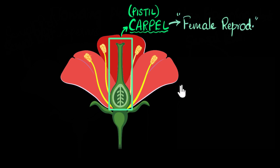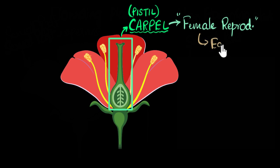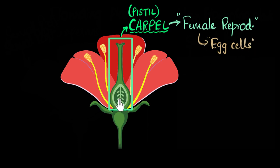Why do we say that the carpel is the female reproductive part? Because the carpel is responsible for the production of egg cells. Just like in animals, any reproductive part that makes the egg cells is called the female reproductive part.